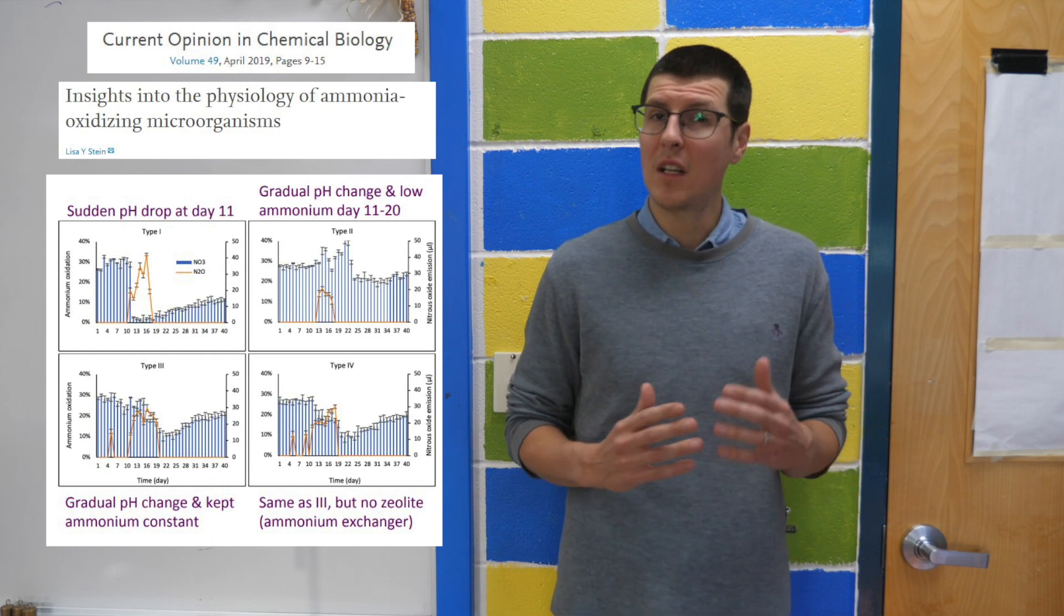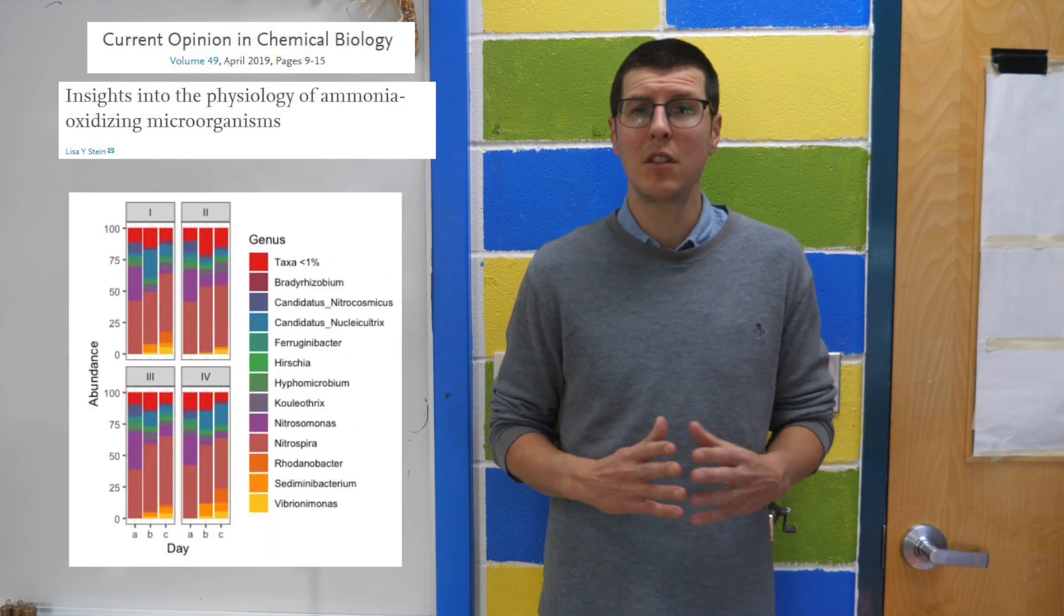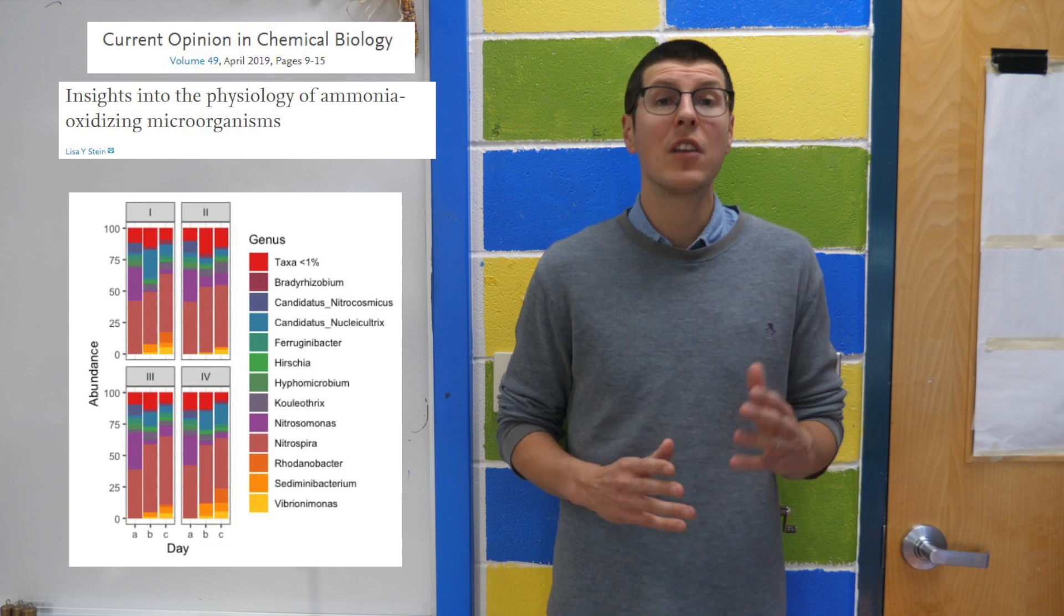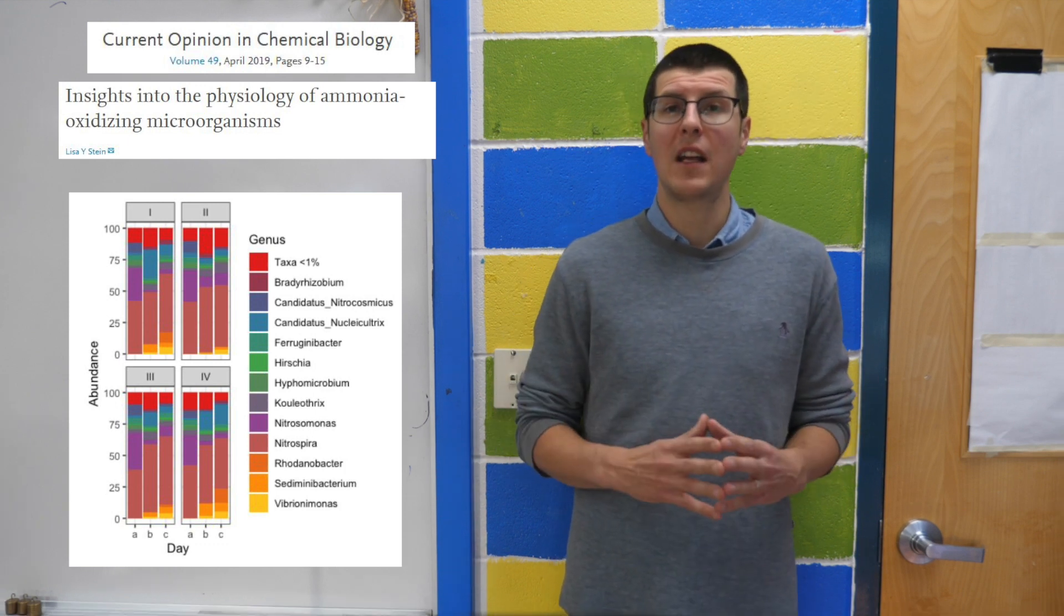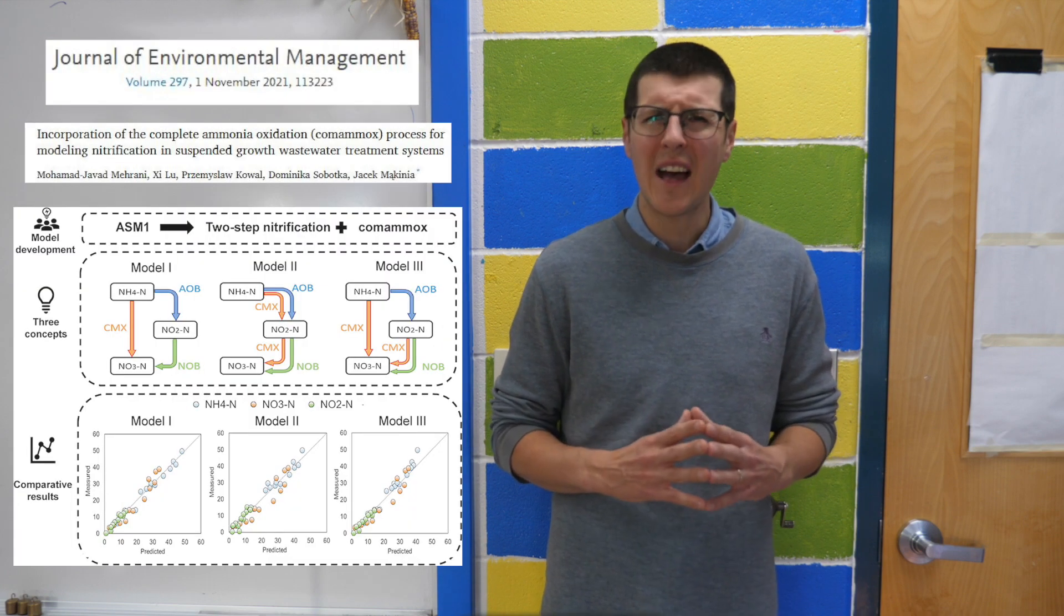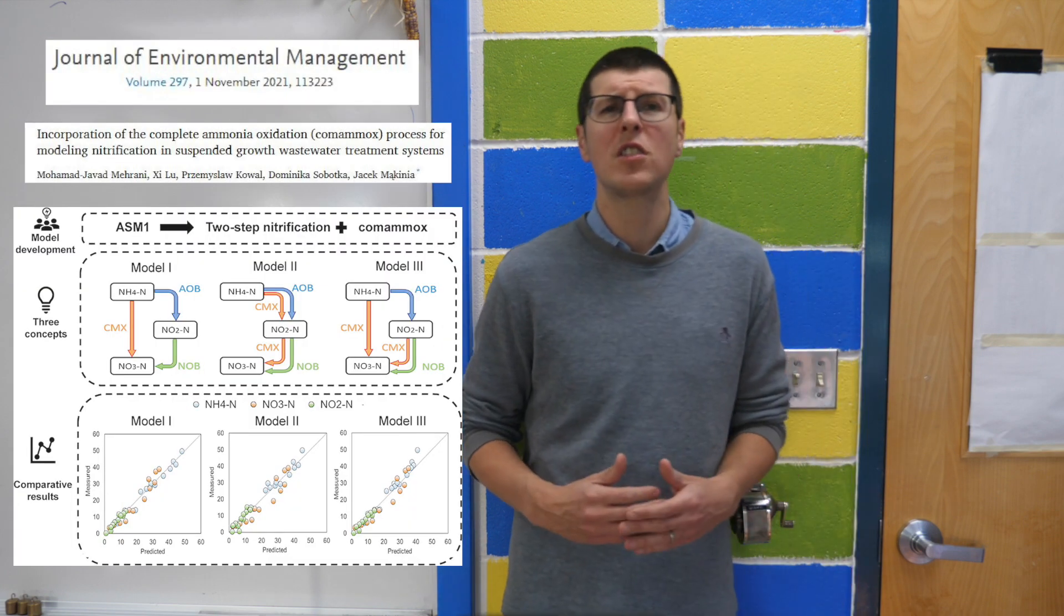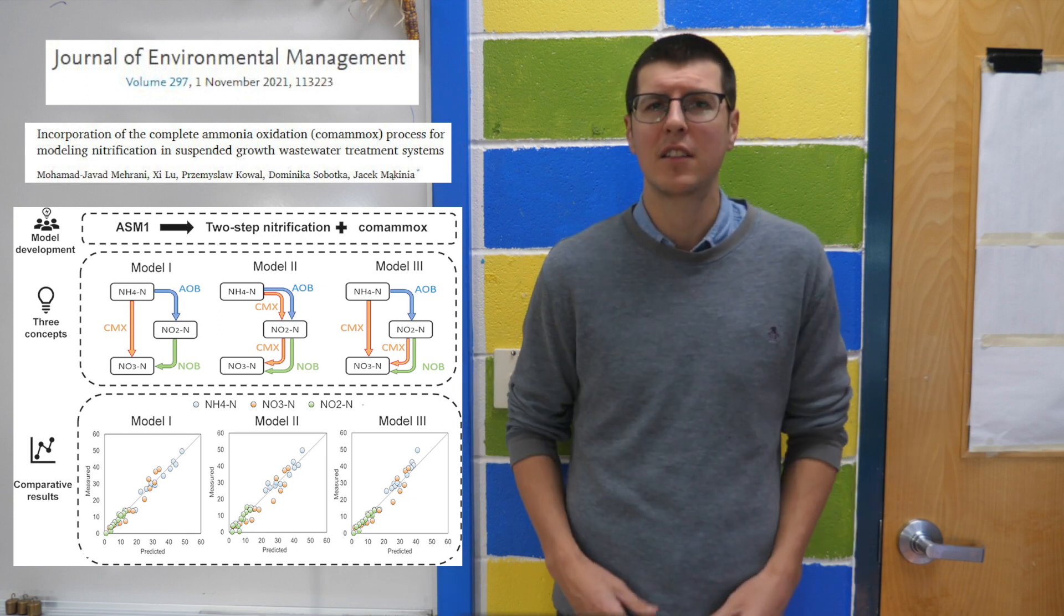What her group found was that in most scenarios, the microbial communities were able to adapt, and the comomox group became more abundant. A new paper that I came across stated that they are still determining how exactly the comomox group accomplishes this ammonia to nitrate oxidation.